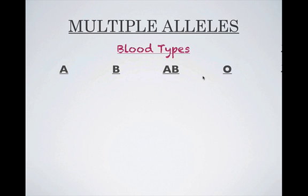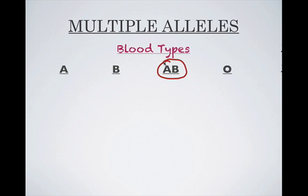Something should jump out at you right away — there must be some sort of co-dominance between A and B, and that's exactly what's going on. Now A and B are dominant over O.